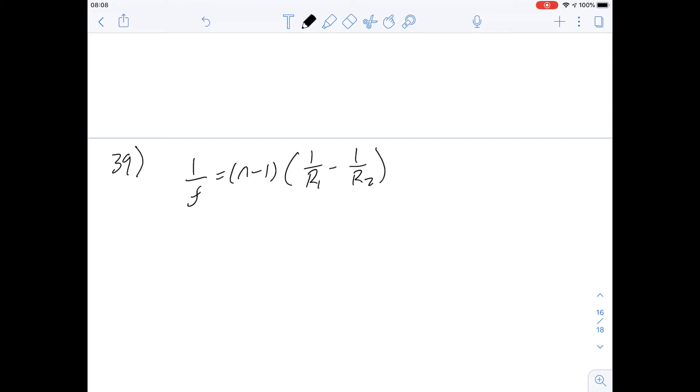So we're told here that the focal length is as long as its radius of curvature. So that means f equals r1 equals r2. So then we could just replace all of this with one letter, and we'll just call it x, and then we'll solve for n at the end.